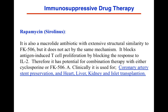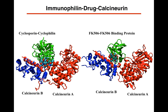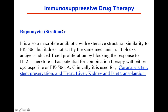Rapamycin, also a macrolid antibiotic, is another drug. Interestingly, it also binds to FK506-binding protein. You might think you could use it with FK506, but cyclosporine and FK506 are not synergistic because they interact with the same part of the pathway. However, rapamycin can be used in combination with cyclosporine or FK506 because its mechanism is different.